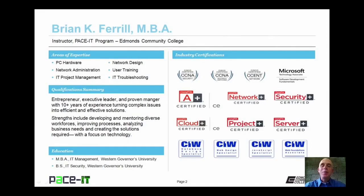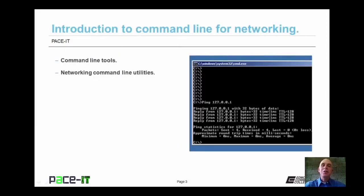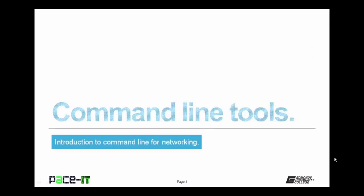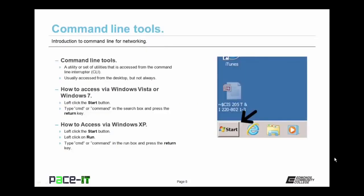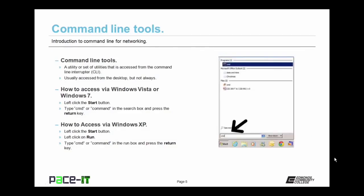I'm Brian Farrell, and welcome to PACE IT's session on command line for networking. Today we're going to be talking about what command line tools are and then discuss some networking command line utilities. Command line tools are a utility or set of utilities accessed from the command line interpreter. In Vista, you click Start and type 'command' or 'CMD' in the run box. In Windows XP, click Start, then Run, and enter CMD or command.